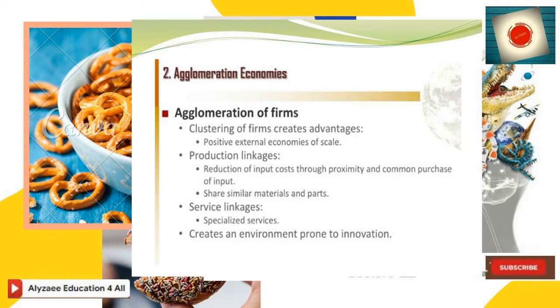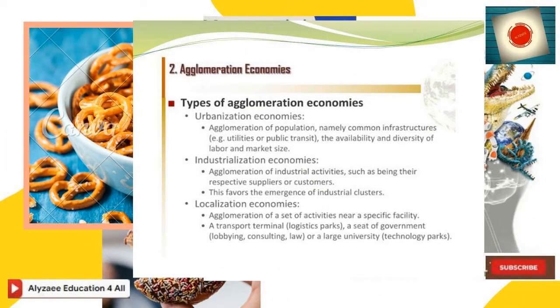Service linkages mean specialized services create an environment prone to innovation — take the example of Tesla. The types of agglomeration include urbanization economies (agglomeration of population with common structures like utilities or public transit, availability and diversity of labor, and market size), industrialization economies (agglomeration of industrial activities with respective suppliers or customers, favoring emergence of industrial clusters), and localization economies (agglomeration of activities near a specific facility, transport terminal, logistics parks, seat of government, or a large university technological park). This picture represents the co-location zone from a logistics and transportation perspective, showing how many activities a main terminal can generate.